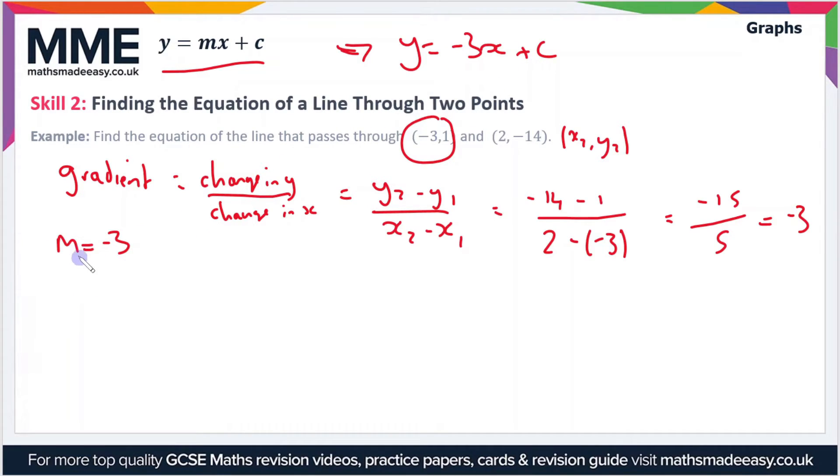So y equals minus 3x plus c, well y now is 1. So 1 equals minus 3 times the x value which is also minus 3 plus c. We just have to solve this equation for c now. 1 equals minus 3 times minus 3 which is 9 plus c. Now subtract the 9 from both sides. So c equals 1 minus 9 which is minus 8.